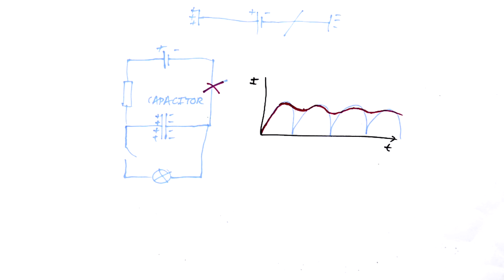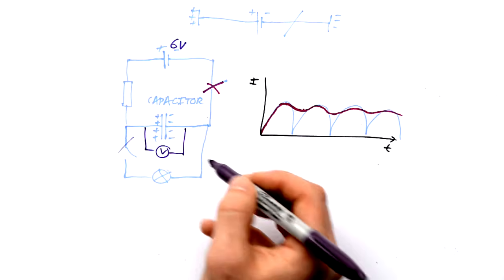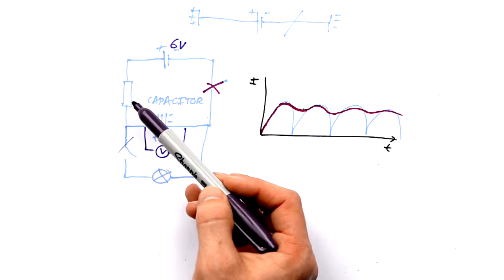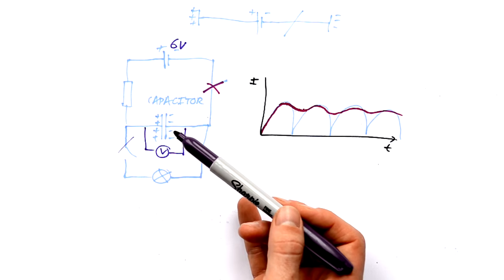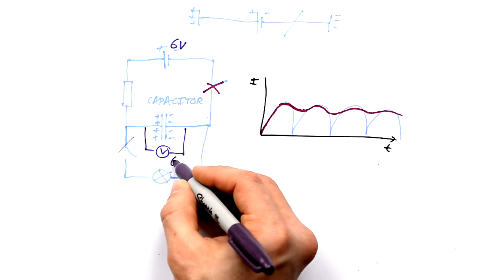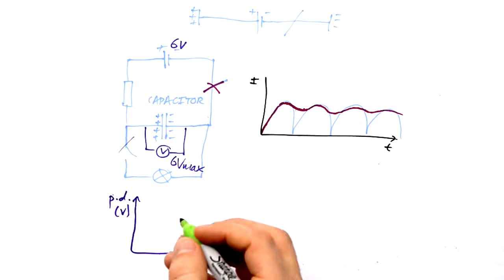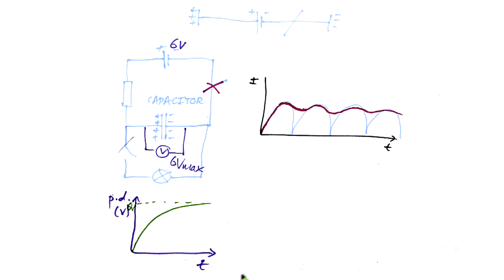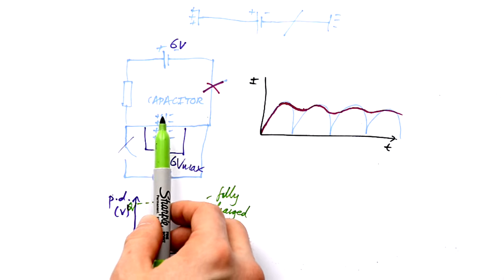That's pretty much everything for GCSE, so let's go into the A-level material. Say the battery supplies 6 volts to the capacitor. As soon as we connect it, a voltmeter across the capacitor reads zero volts because the plates are initially uncharged — the remaining voltage is taken up by the resistor. As time goes on and the capacitor charges, the PD across it increases up to a maximum of 6 volts. A graph of PD over time shows a curve levelling out at 6 volts — that's when it's fully charged and we can't fit any more charge on the plates.